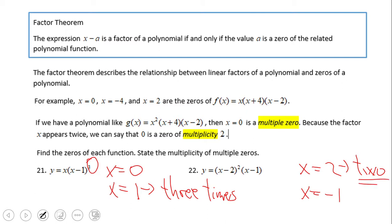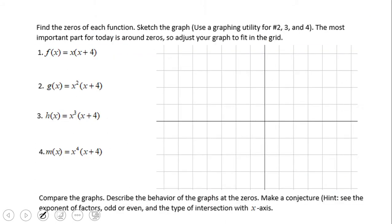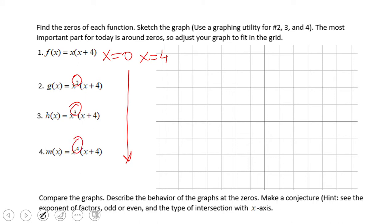In the next part we have a discovery activity where we're going to look at the behavior of the graph. On the first part of this activity we find the zeros of each function — all of them have x equals 0 and x equals negative 4. The only difference is x equals 0 appearing once, twice, three times, or four times, giving multiplicities of 1, 2, 3, and 4.